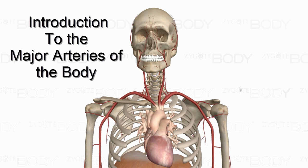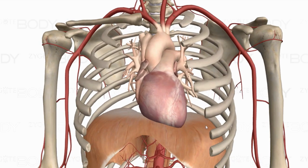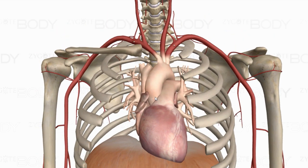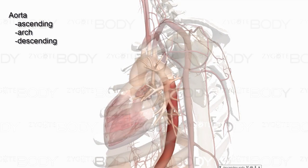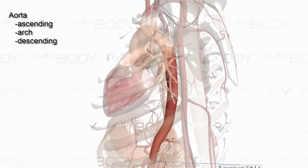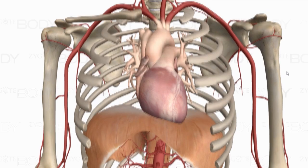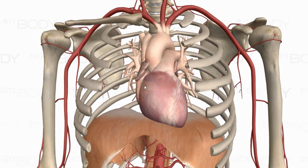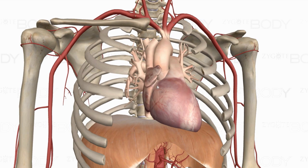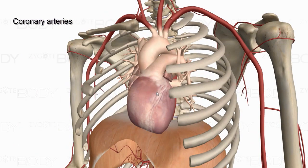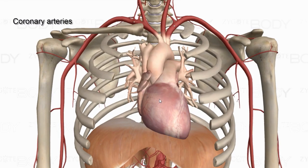In this video we're going to look at the major arteries of the body. Starting with the heart, the major vessel going out to the whole body is the aorta. The aorta consists of the ascending aorta, the aortic arch, and — peeking through the ribs — the descending aorta, also called the thoracic aorta. The first branches coming off the aorta are the right and left coronary arteries, because the heart wants first dibs on that oxygenated blood.